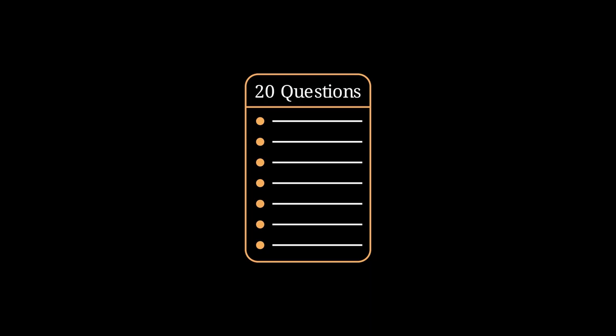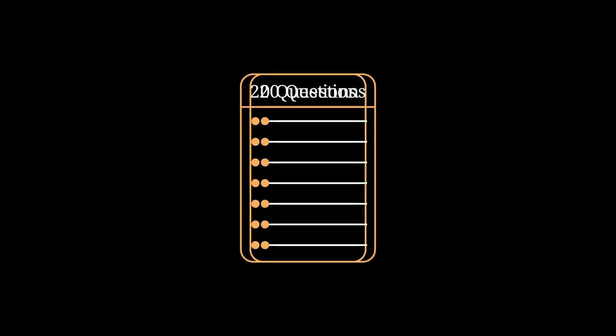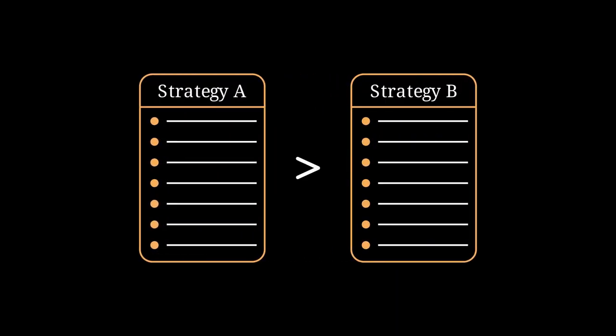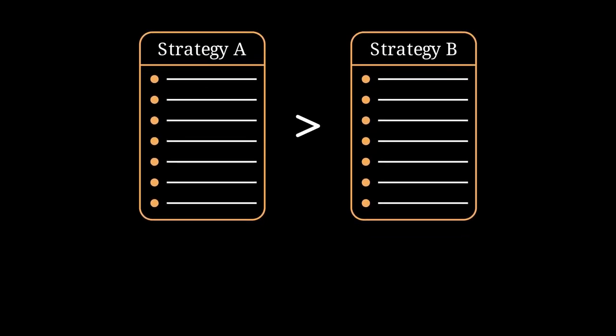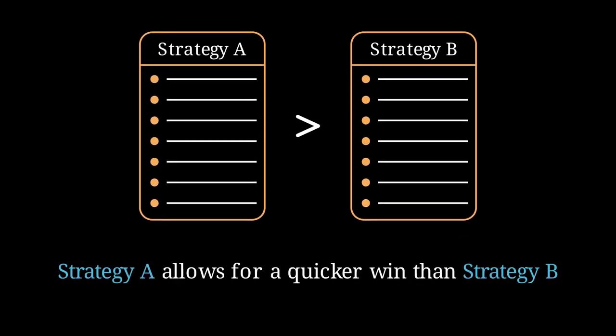We're looking for a strategy that's somehow better than every other possibility, so given two strategies A and B, we'll need some way to compare the two. We might say that strategy A is better than strategy B if strategy A allows the questioner to win in less questions than strategy B.